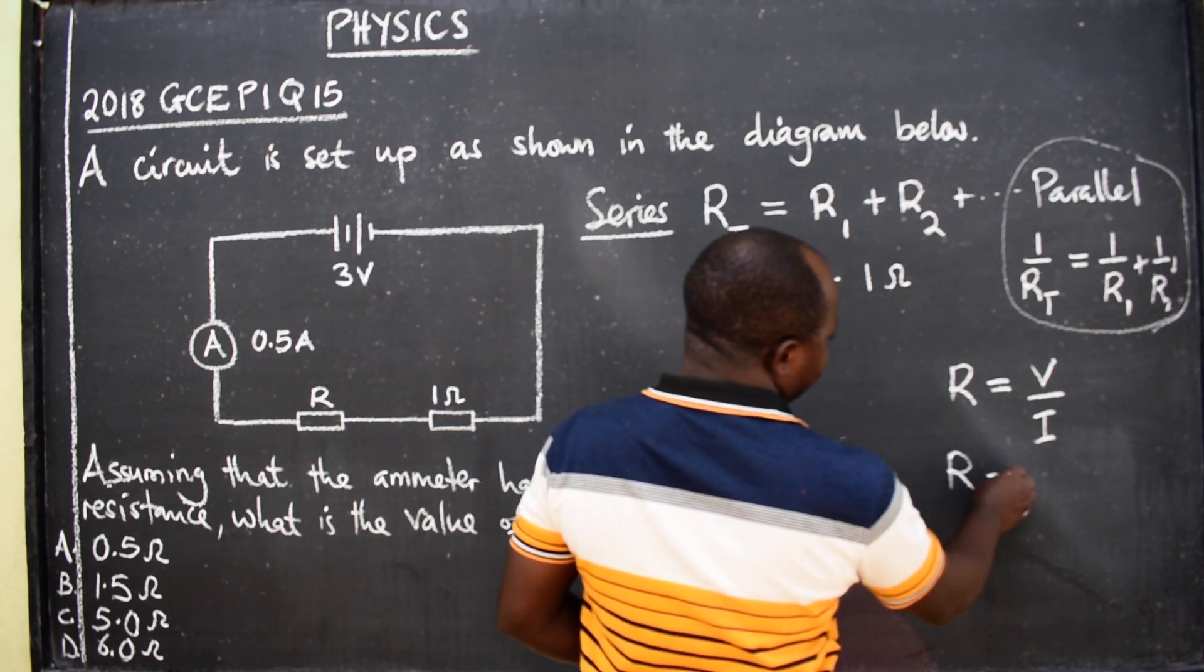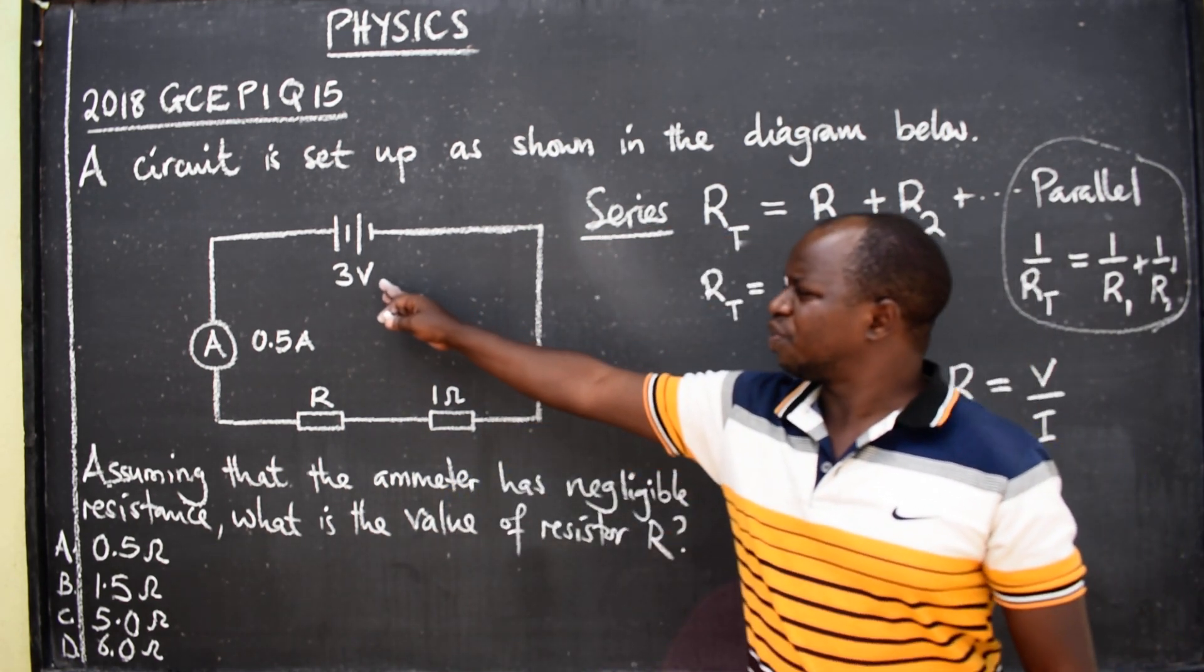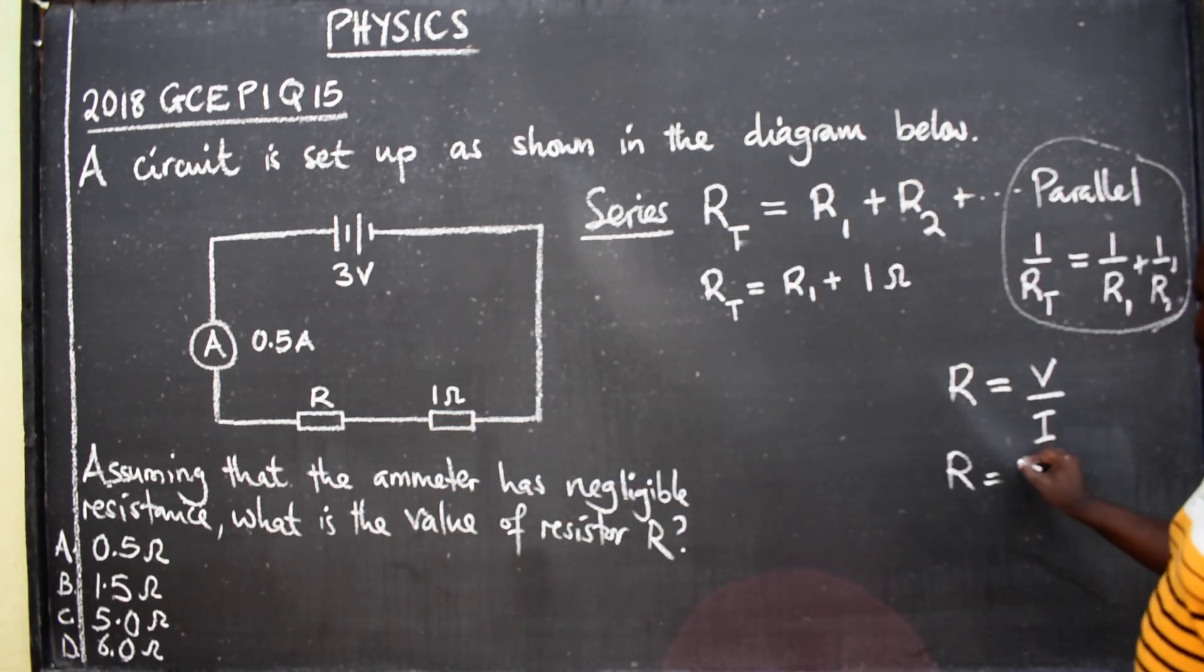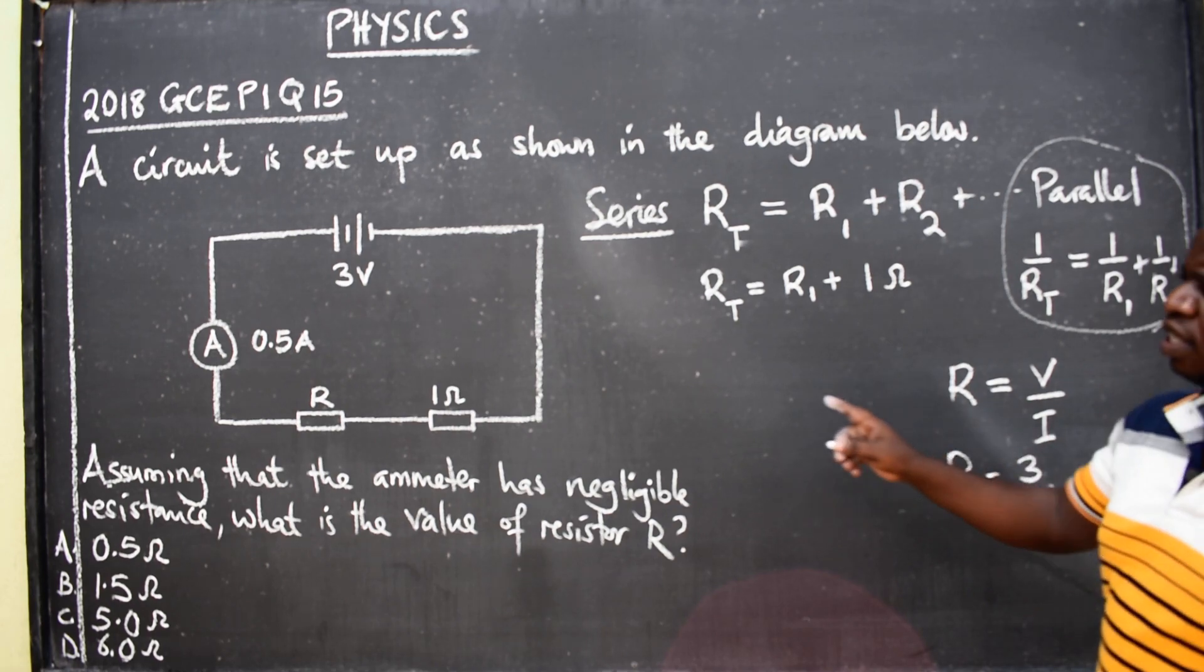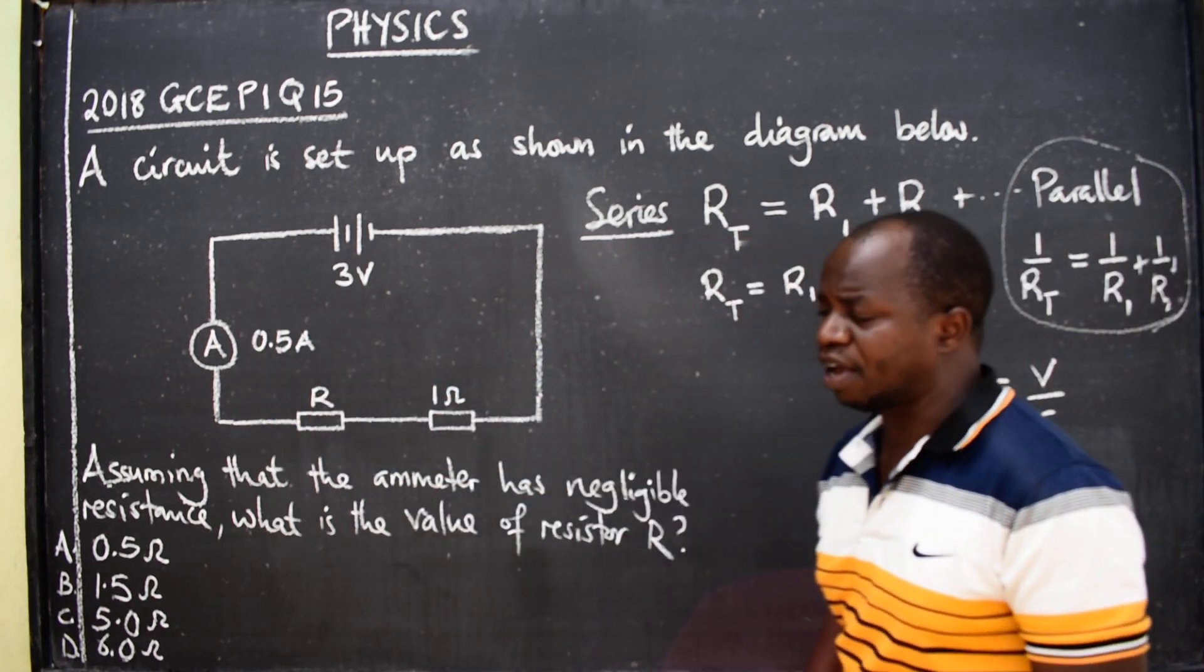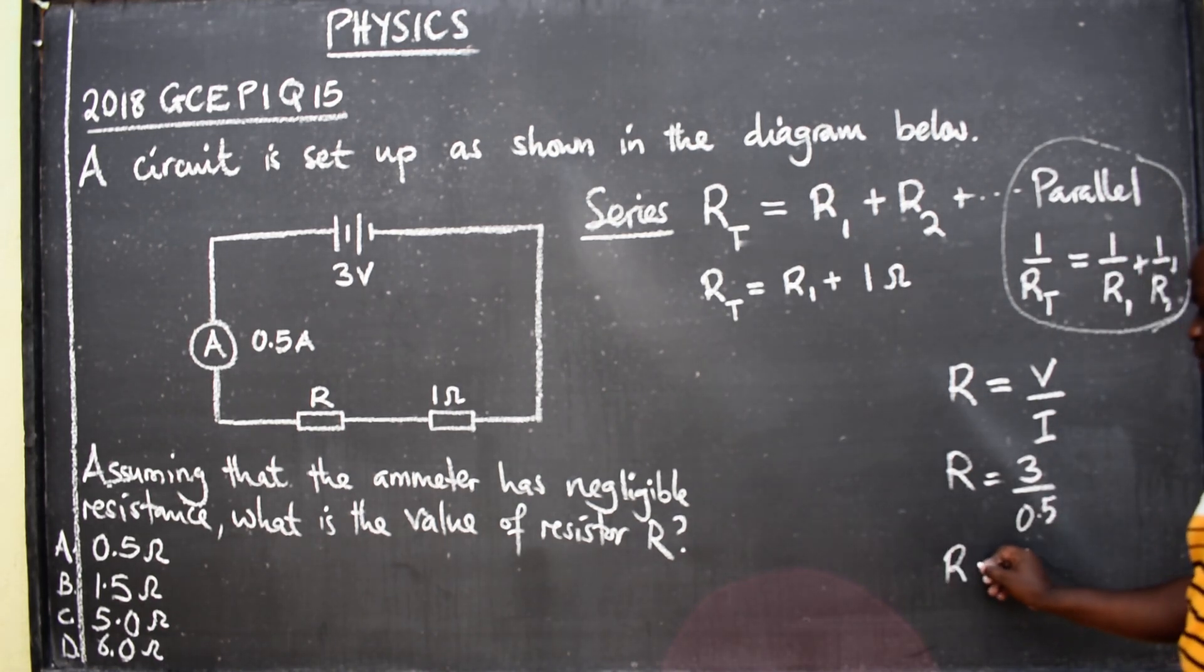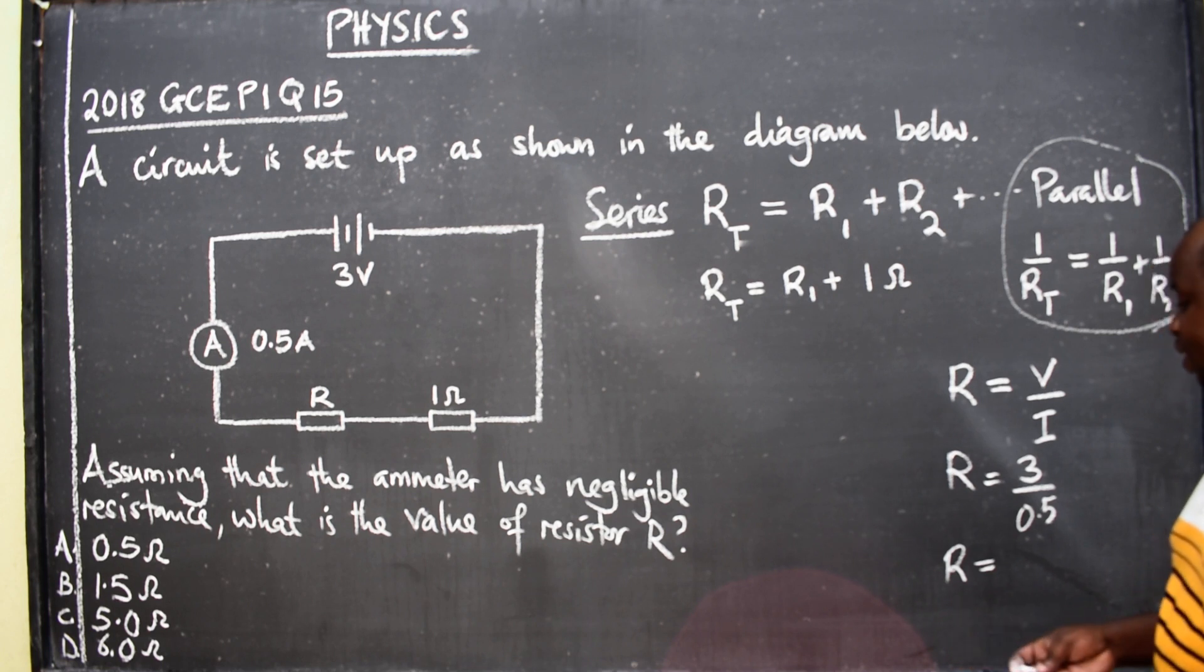So we are going to say resistance is equal to voltage, which is 3, over ammeter reading, which is the current 0.5. Our total resistance now will be 3 divided by 0.5, we are getting 6. 6 Ohms.